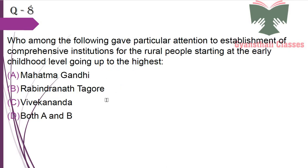Next question: Who among the following gave particular attention to the establishment of comprehensive institutions for rural people, starting at the early childhood level going up to the highest? It was given by both Mahatma Gandhi and Rabindranath Tagore. So the answer is both A and B.